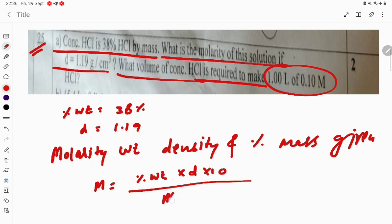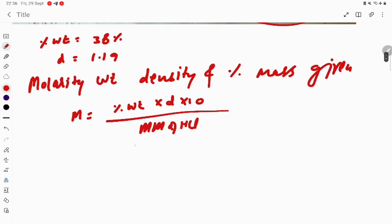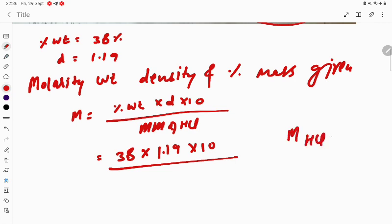For HCl, we write: molarity equals percentage weight multiplied by density into 10 divided by molar mass of HCl. So 38 percent times 1.19 times 10 divided by the molar mass of HCl.